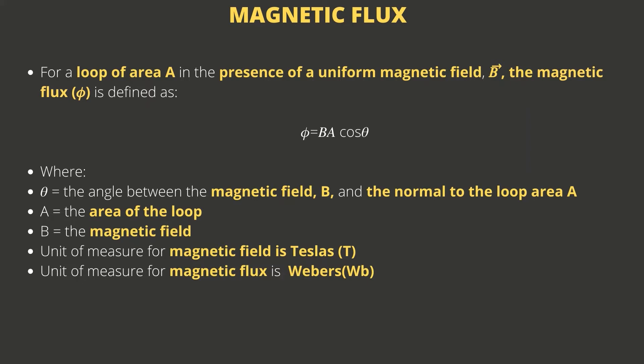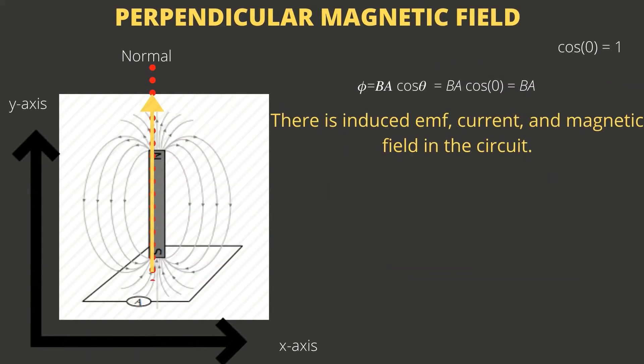The other important thing to mention in the magnetic flux equation is the angle theta. The angle theta is the angle between the direction of the magnetic field vector and the normal. When we talk about the normal, we mean something that is perpendicular to the surface. So it is the angle between the magnetic field B and the normal to our wire loop with area A. I will explain that angle further in the next few slides.